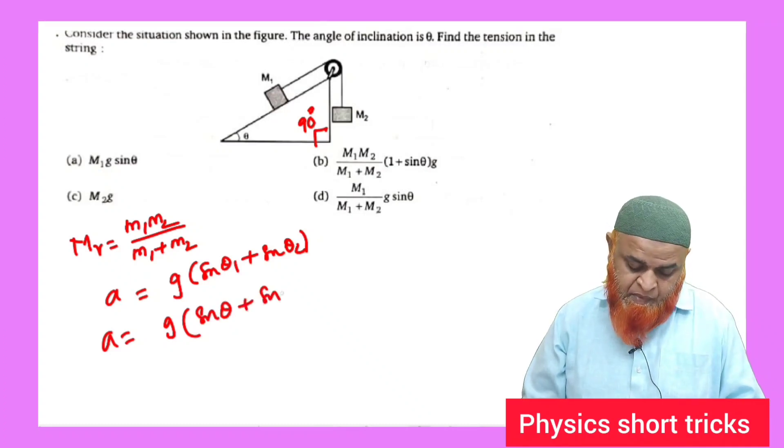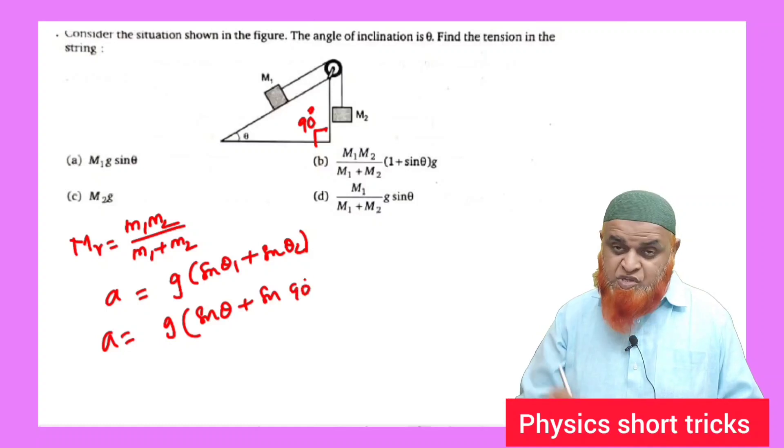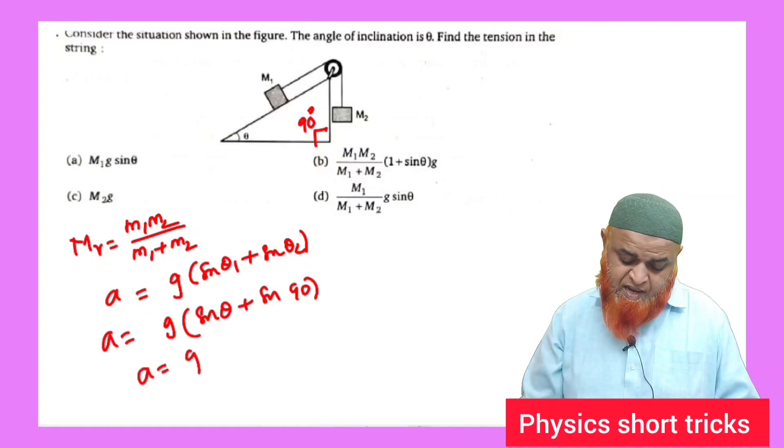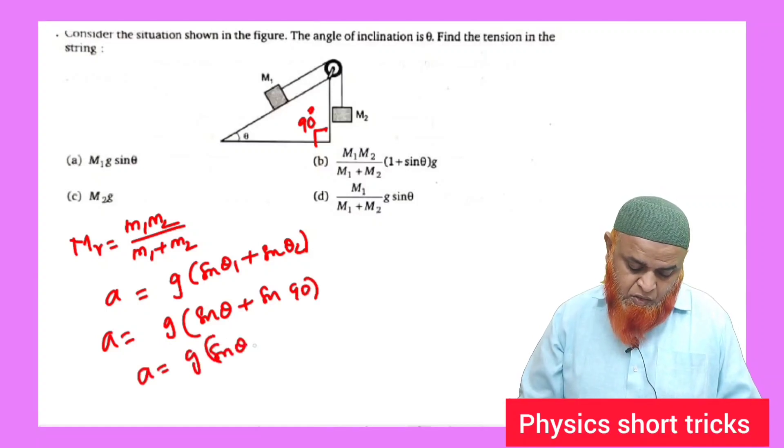Acceleration is equal to g. Here theta 1 can be considered as theta which is there, so sine theta. And theta 2 is taken as 90 degrees which is specified in the diagram.